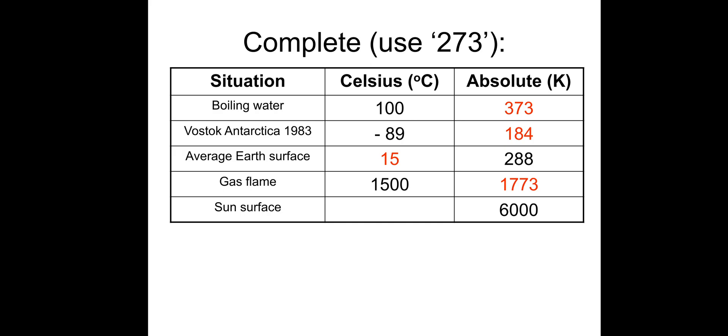A gas flame of 1500 degrees Celsius is 1773 Kelvin. The sun's surface is 6000 Kelvin, which is 5727 degrees Celsius. Of course, as you move towards the centre of the sun, the temperature increases drastically until it reaches around 15 million degrees towards the centre.